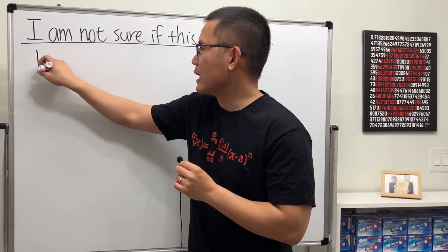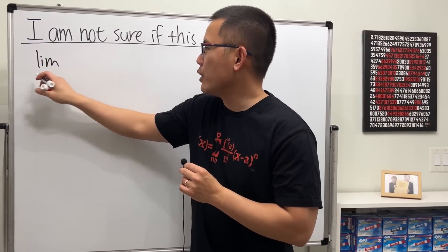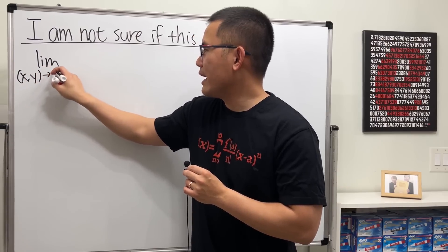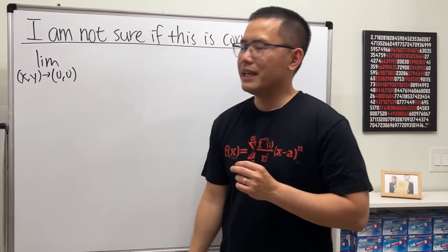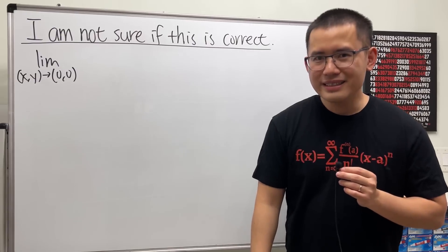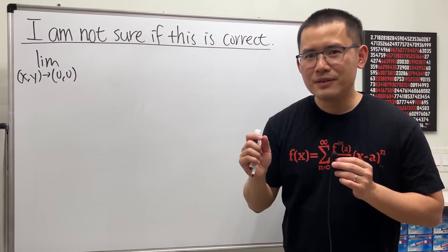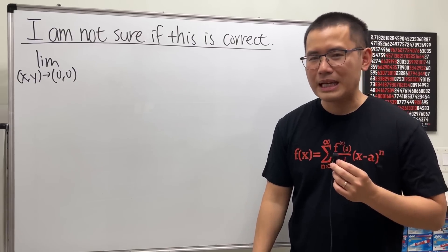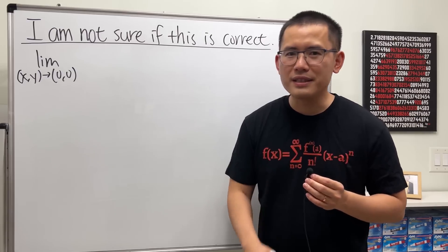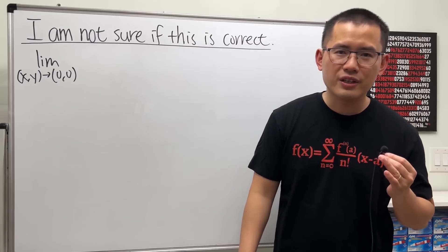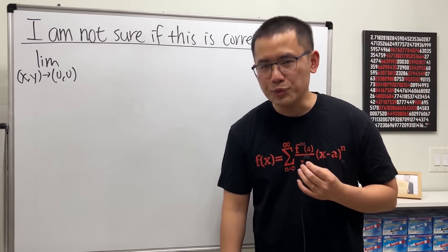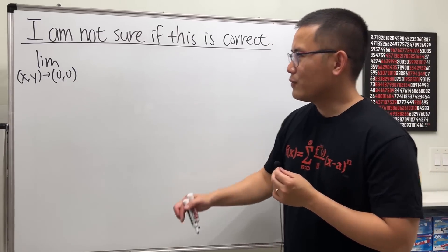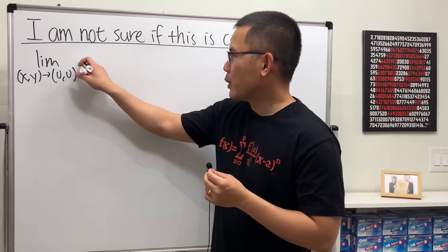Here's the story: I was just trying to come up with some limit questions for you guys. Let's say we have x, y going to (0, 0) — a limit for a multivariable function — because I've been doing a lot of Calc 3 videos for you guys on the other channel, and I will have the link in the description if you want to check them out.